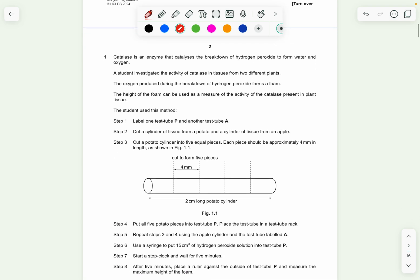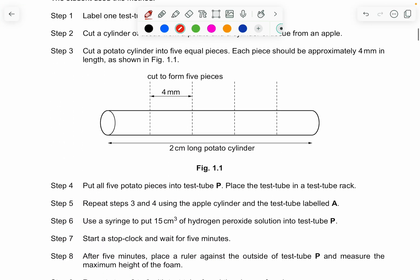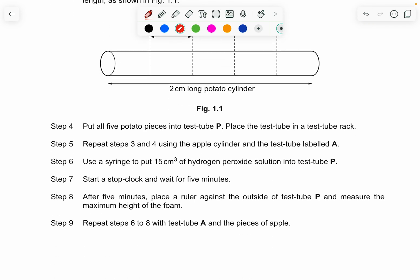So question number one, catalase is an enzyme that catalyzes the breakdown of hydrogen peroxide to form water and oxygen. A student investigated the activity of the catalase in tissues from two different plants. The oxygen produced during the breakdown of hydrogen peroxide forms a foam. The height of the foam can be used as a measure of the activity of the catalase present in plant tissue. So let's start by breaking down this question. The question asks to investigate the activity of the catalase. So this is the IV of the question. And then the DV, the DV is the height of the foam. So the student will use this method by labeling this test tube. Cut a cylinder and then you can see that it's in a cylindrical shape, about approximately 4 mm in length.